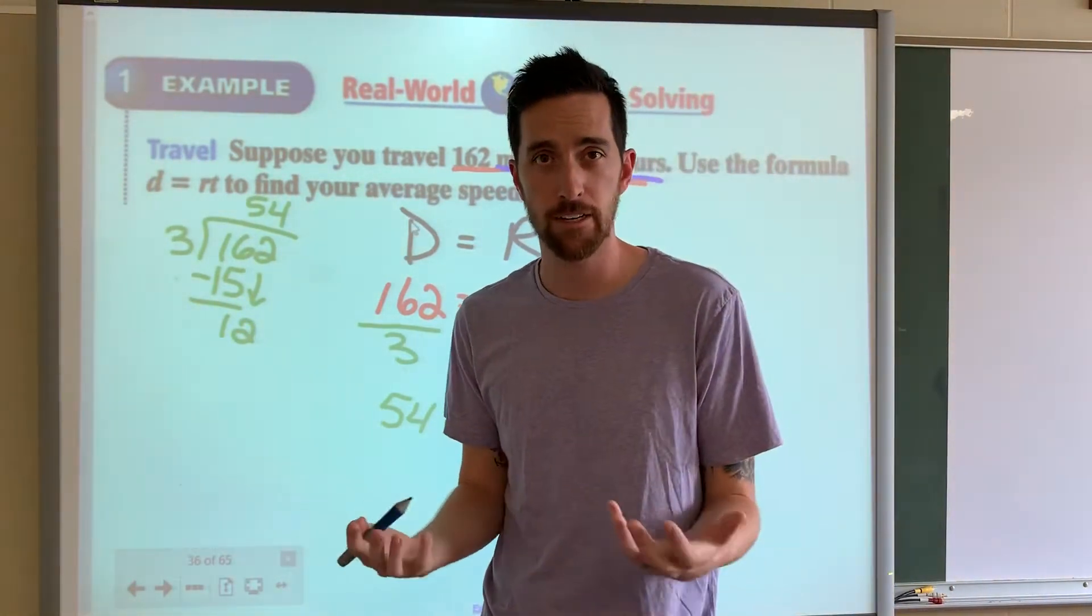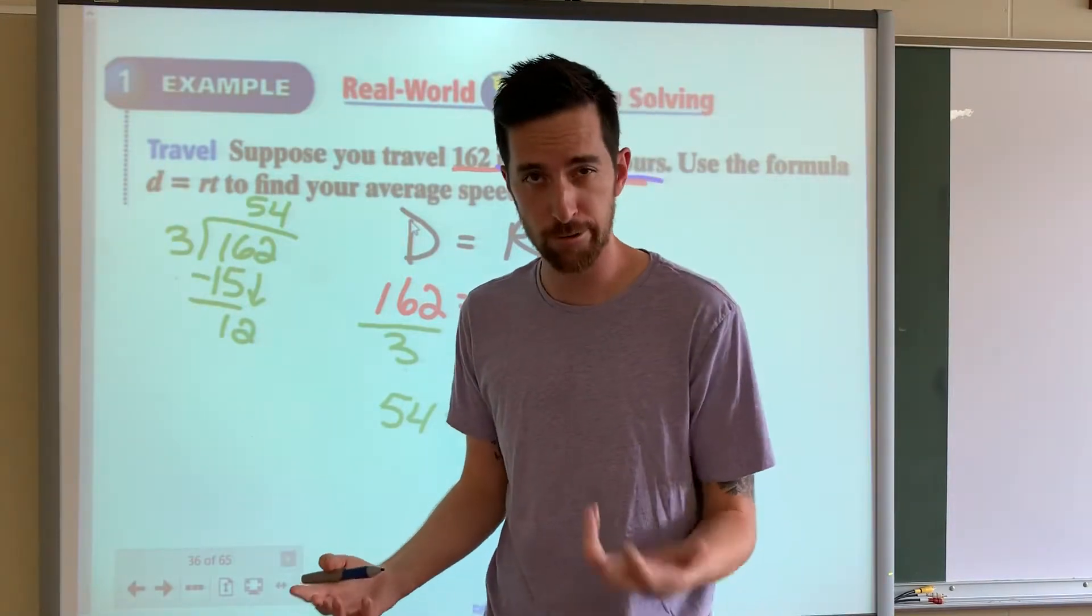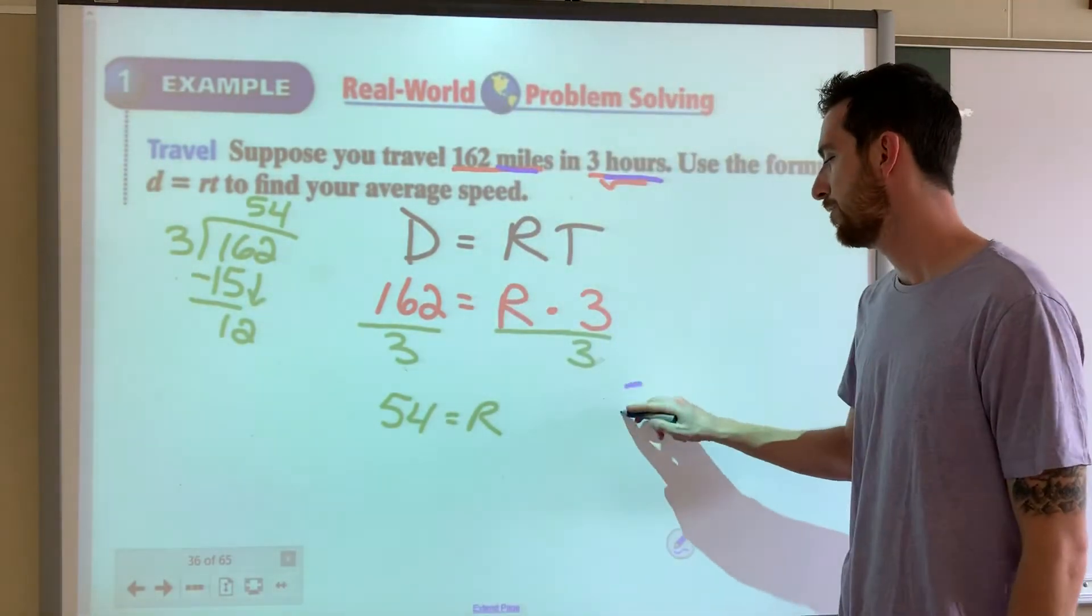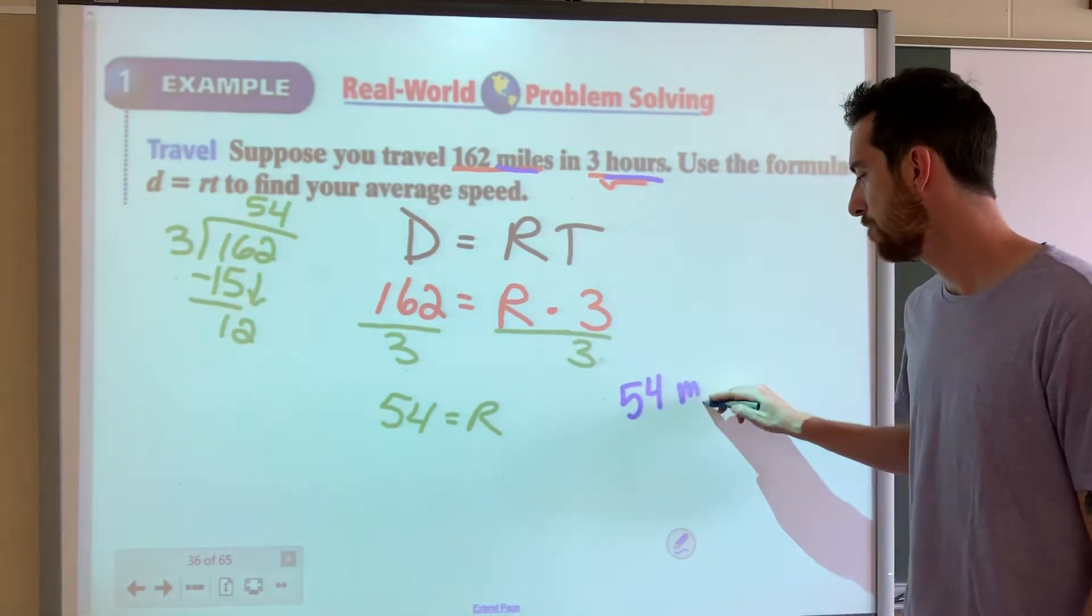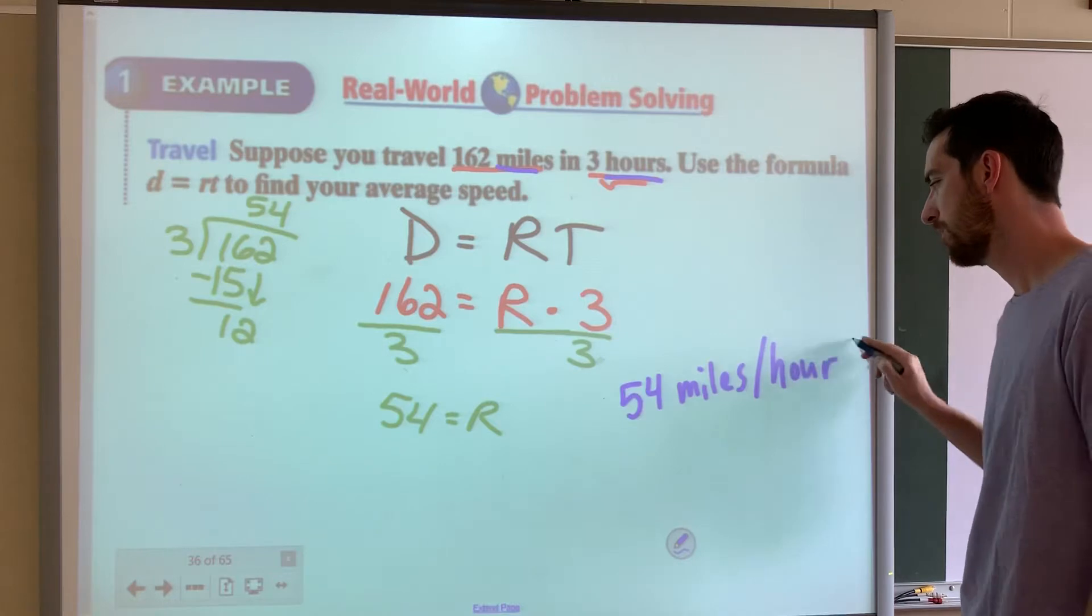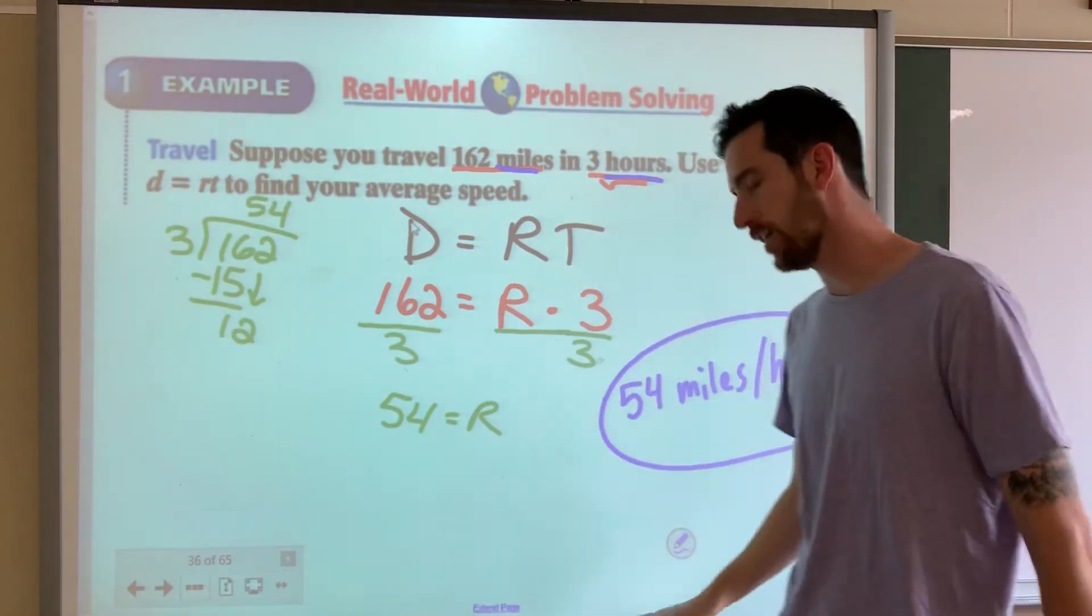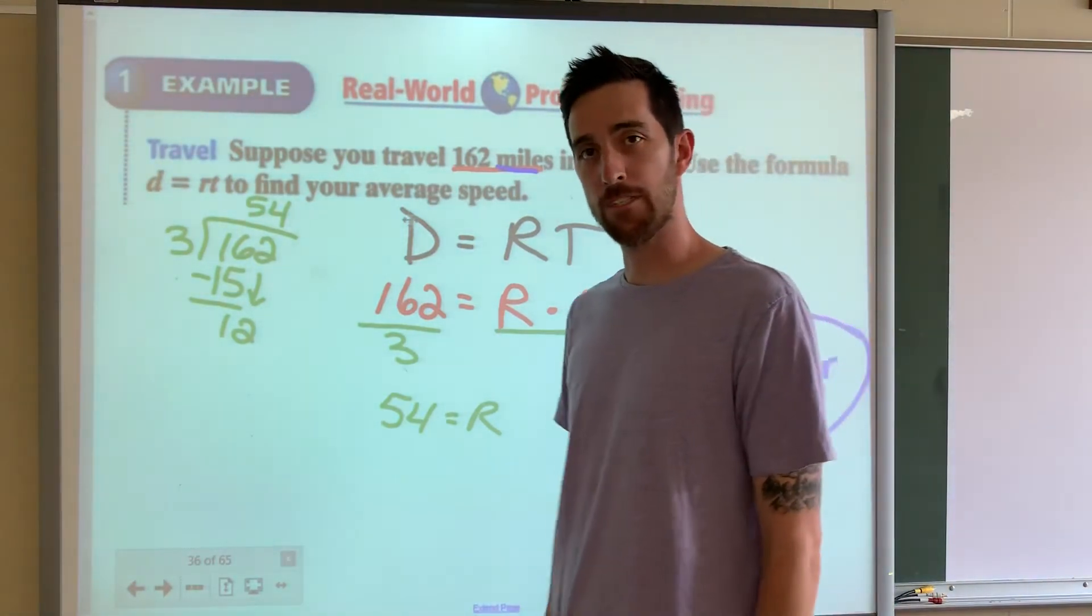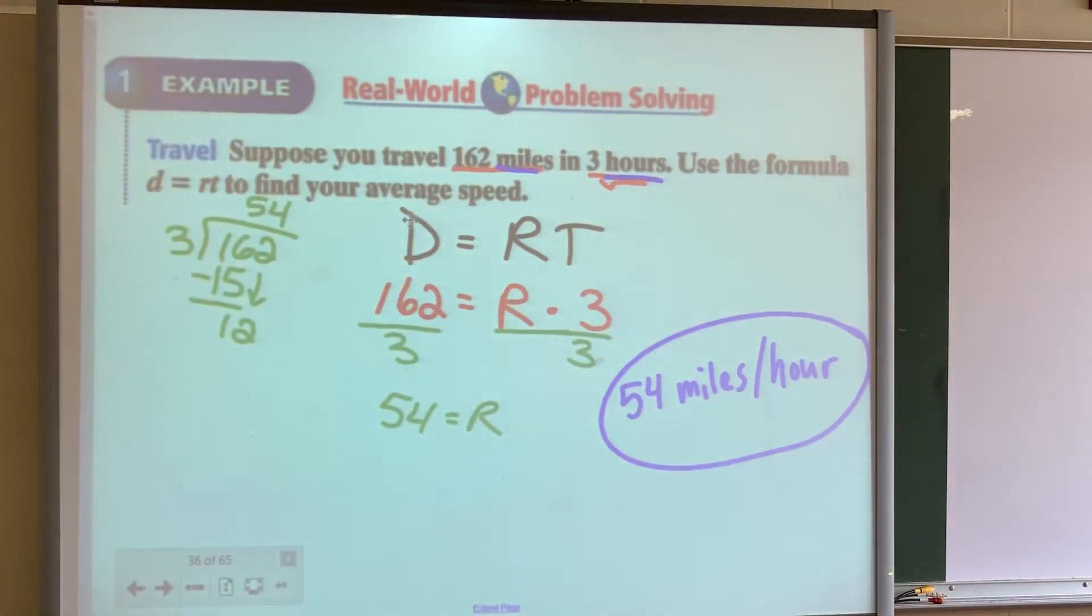If you're in America driving, we call that miles per hour. So we'll say 54 miles per hour. If you're elsewhere, it might be kilometers per hour, but we're doing miles per hour here.